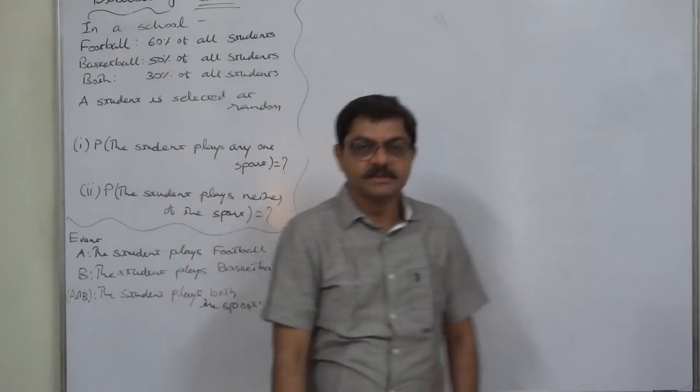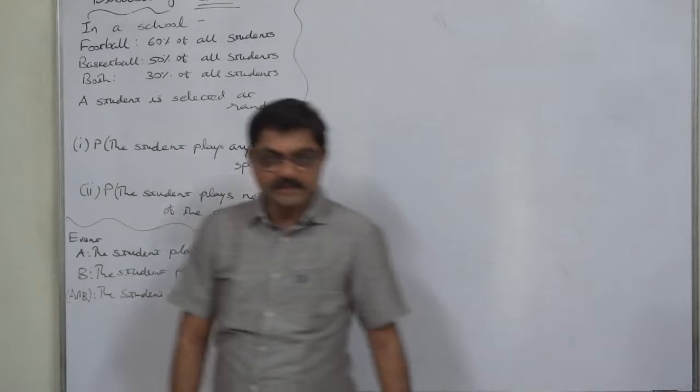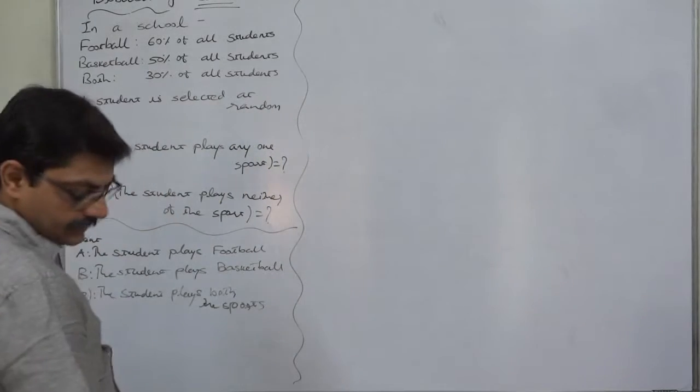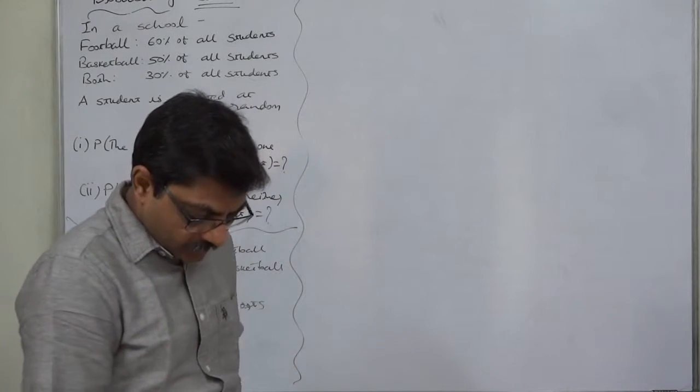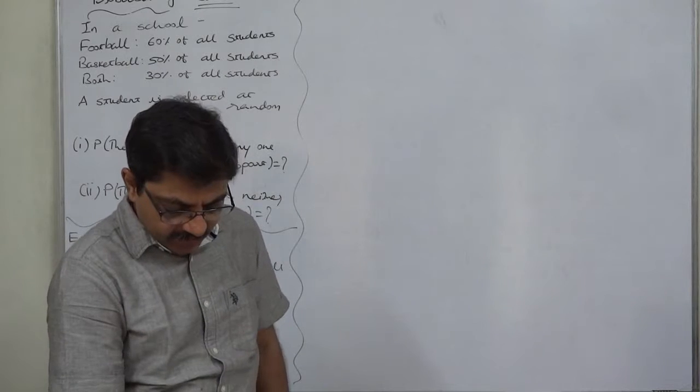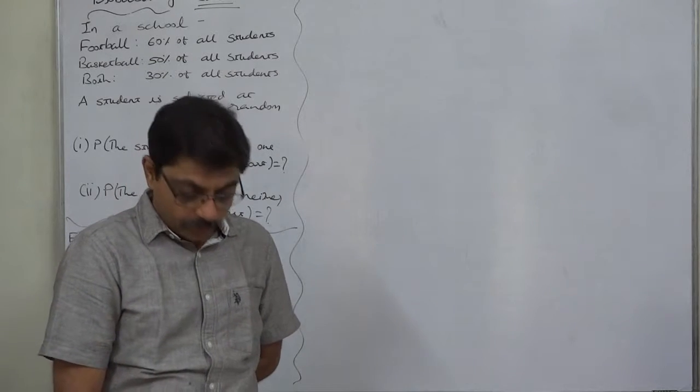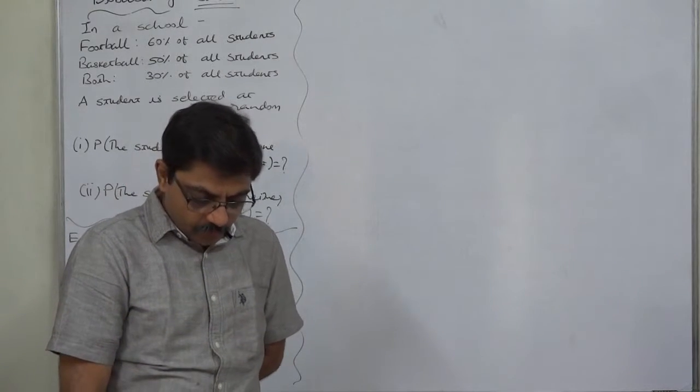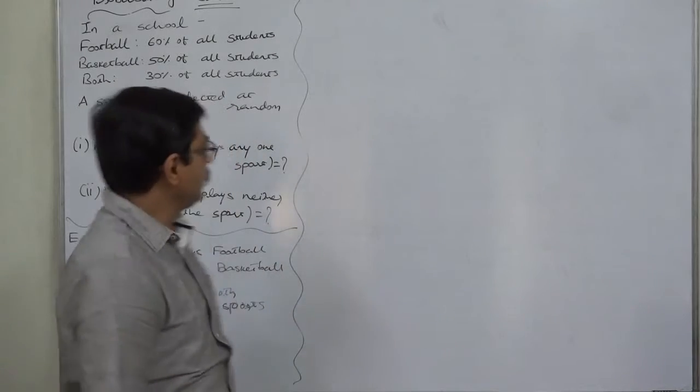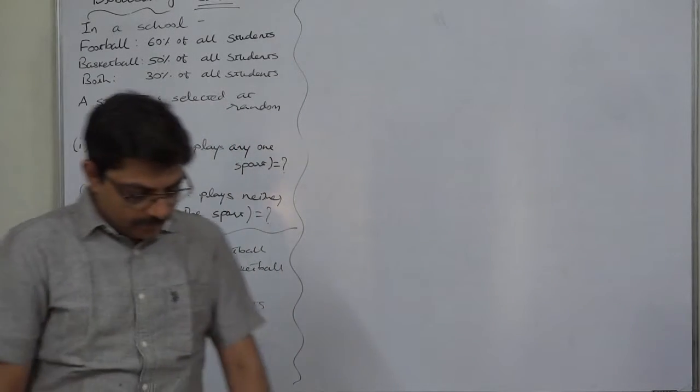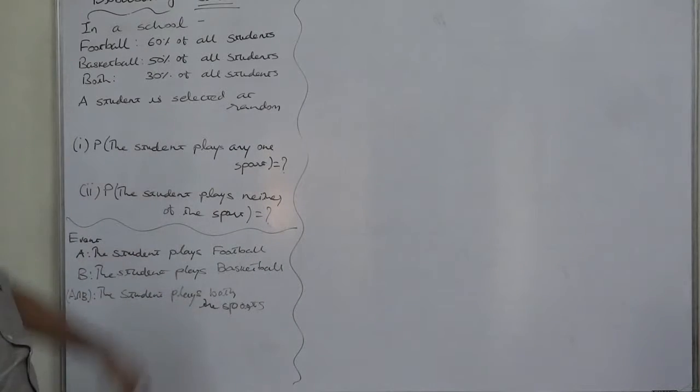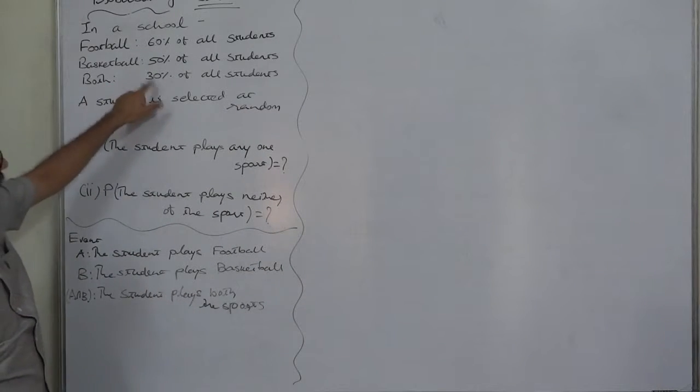Hello friends, the next problem in basics of probabilities. In a certain school, the students engaged in various sports are in the following proportion: Football 60% of all students, Basketball 50% of all students, and both sports 30% of all students.